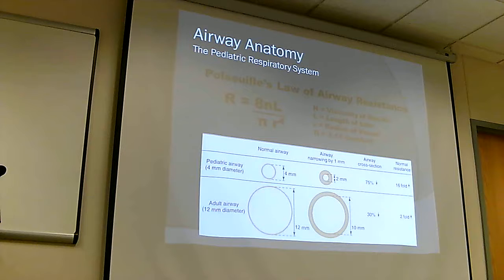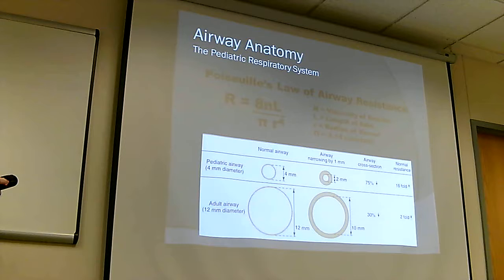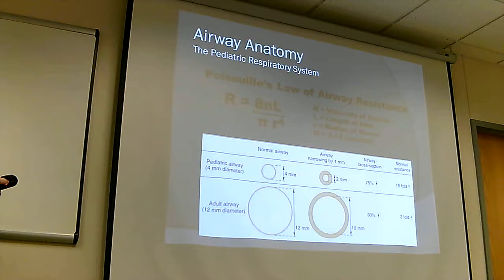Grassell's Law of airway resistance states that bigger airways have less resistance and better, more laminar flow, while smaller airways have more resistance and more turbulent flow. Importantly, the radius of the vessel or tube is raised to the fourth power in the equation — so even a small decrease in radius causes a dramatically disproportionate increase in resistance. This is why bronchoconstriction and intubating small pediatric patients creates such significant airflow challenges.